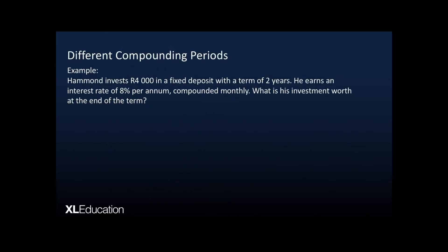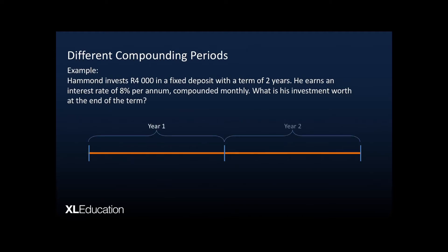Let's do an example. Hammond invests 4,000 rand in a fixed deposit with a term of two years. He earns an interest rate of 8% per annum compounded monthly. What is his investment worth at the end of the term? We're going to represent this on a timeline over two years. The interest rate is 8% per annum, but it's compounded monthly, which means interest is calculated each month.